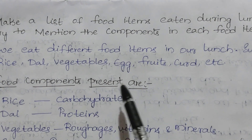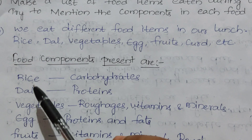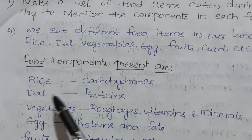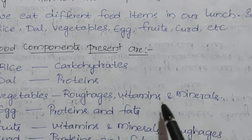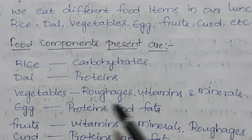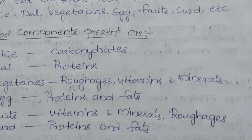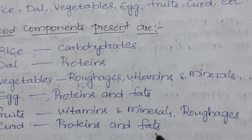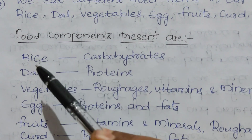Now let's see the food components present in these food items. In rice, carbohydrates are present. In dal, proteins are present. In vegetables, roughages, vitamins and minerals are present. In egg, proteins and fats are present. In fruits, vitamins, minerals and roughages are present. In curd, proteins and fats are present. You can also add water.